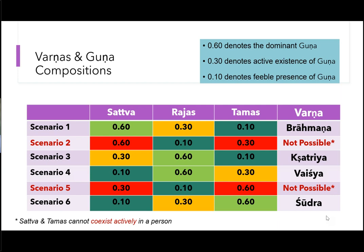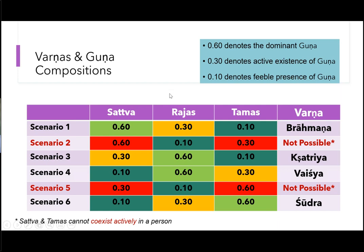The four Varnas are Brahmanas, Kshatriyas, Vaishyas, and Shudras. These definitions are coming from one's inherent nature. Let's understand it in a little more detail using the Bhagavad Gita. Bhagavad Gita Chapter 18 has all the shlokas that we need.